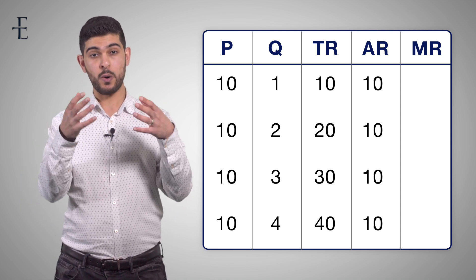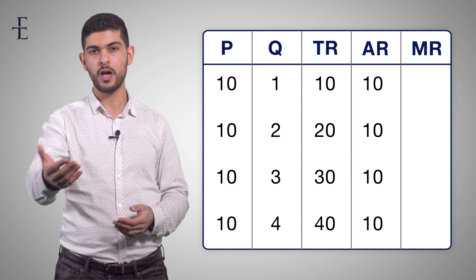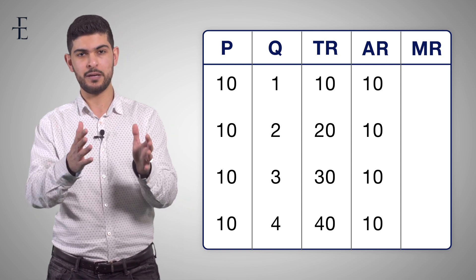Average revenue is equivalent to the price of 10. Because of course, if every single unit that you're selling is £10, your average is consistently £10.